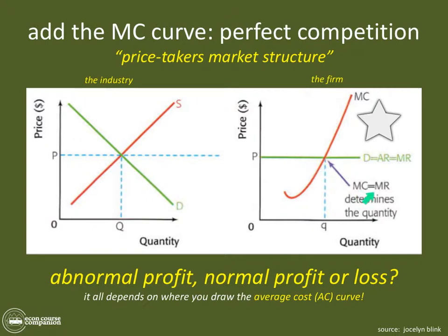The profit-maximizing level of output is where MC equals MR. This is not the revenue-maximizing point — think of it solely as the point where, at this quantity, the firm has the potential to make the most profit, because this is where marginal costs equal marginal revenue.